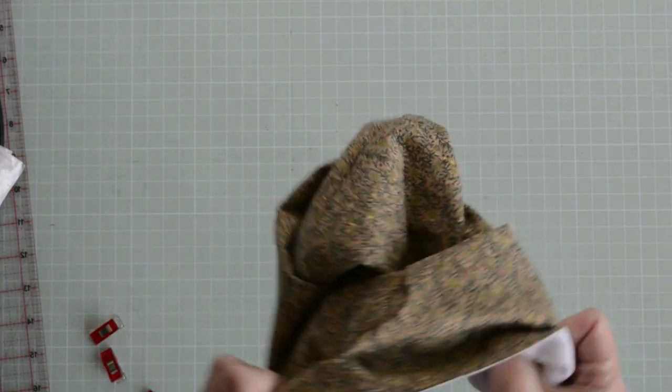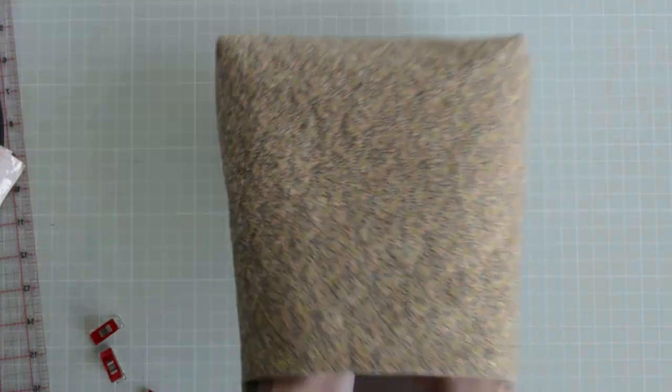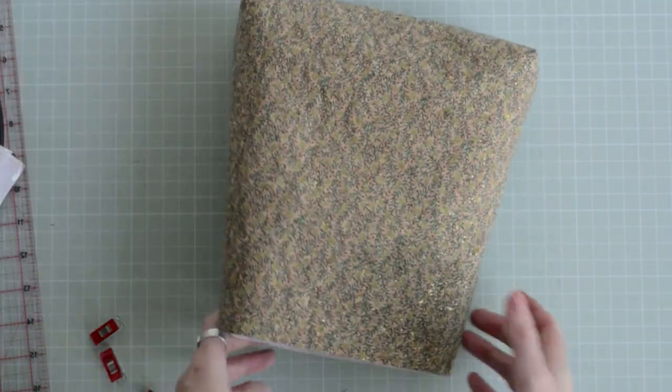So this is the main body of the bag, external fabric, which is the cork. I'm just going to push those corners out. There we go. There's the outer main body of the bag.